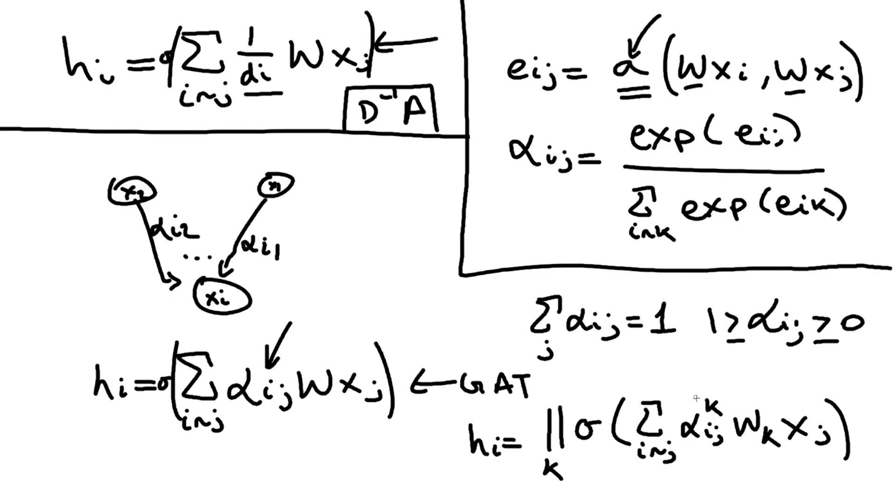This is it - these are graph attention networks. I hope this was clear. In the next video we will talk about a very deep connection between graph attention networks and transformers, so stay tuned for that one. See you in the next one.